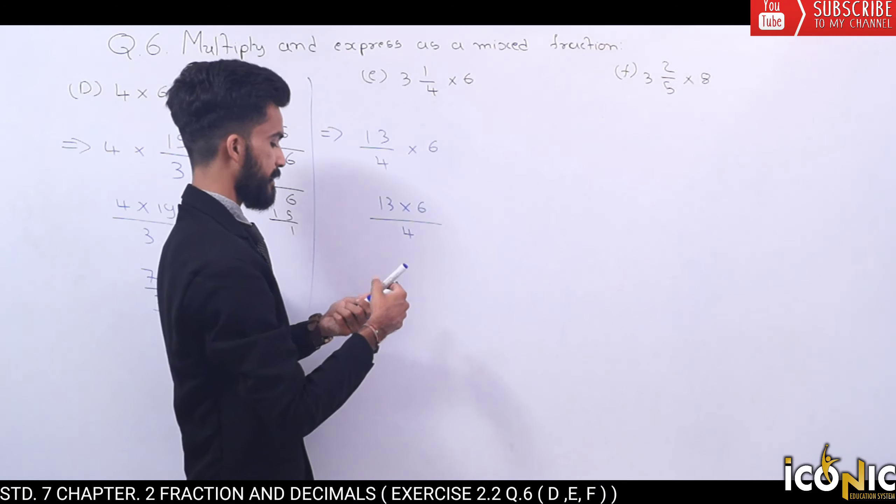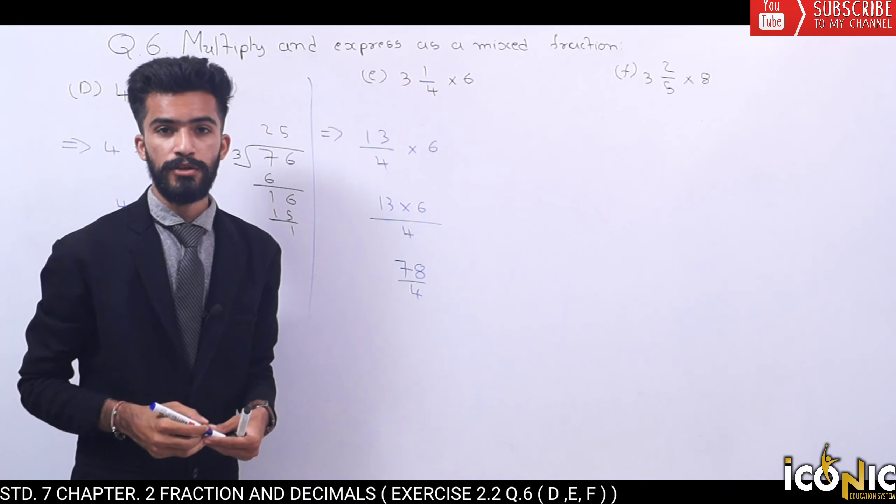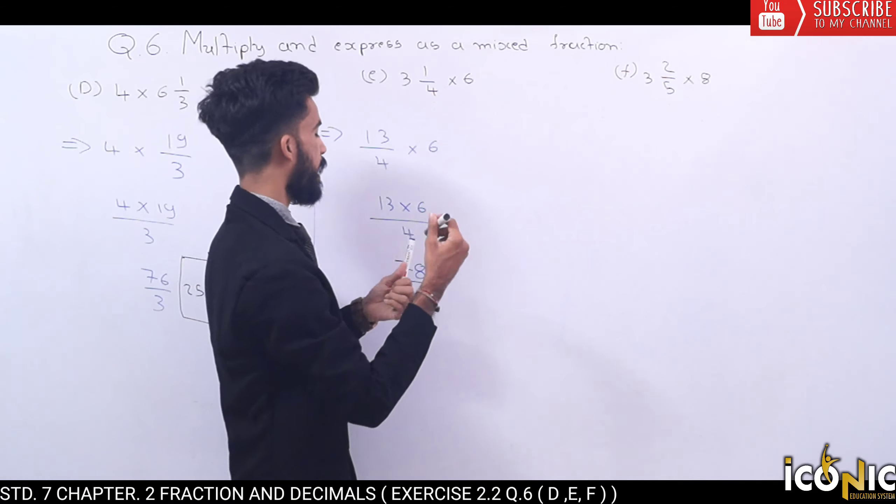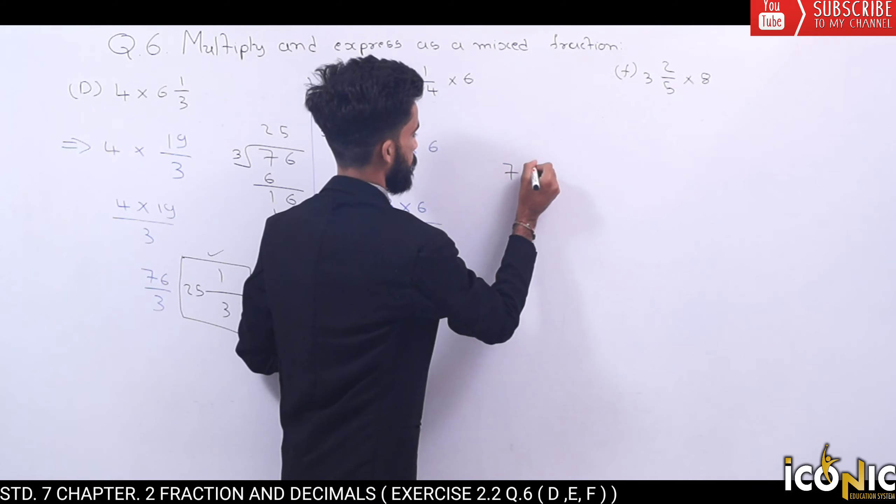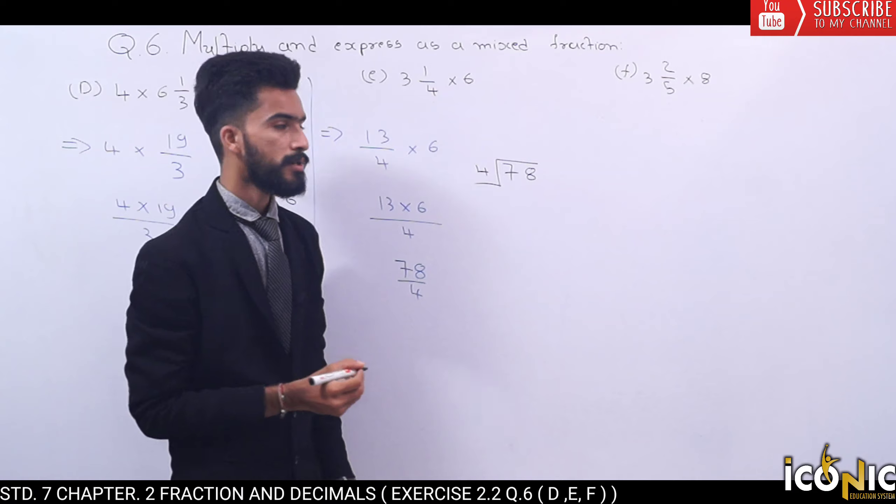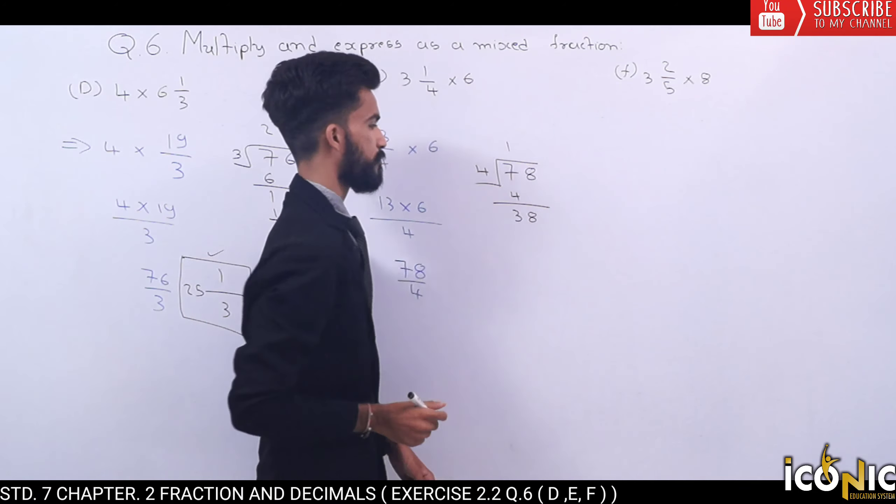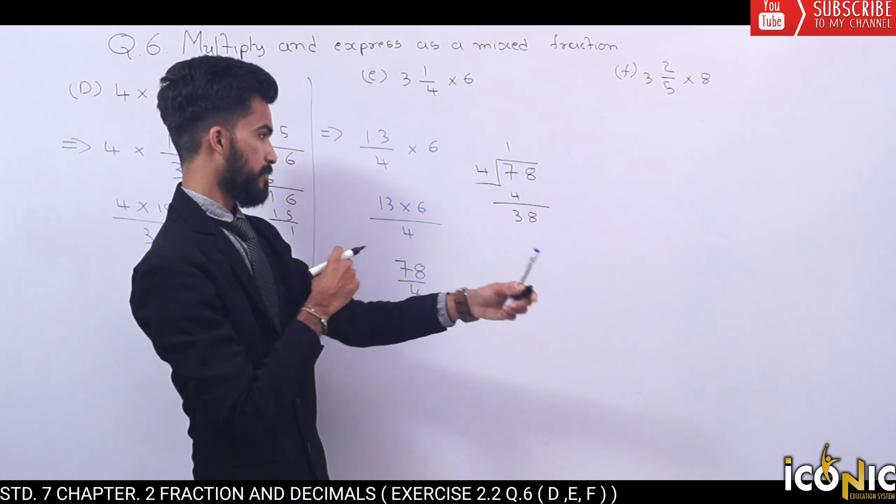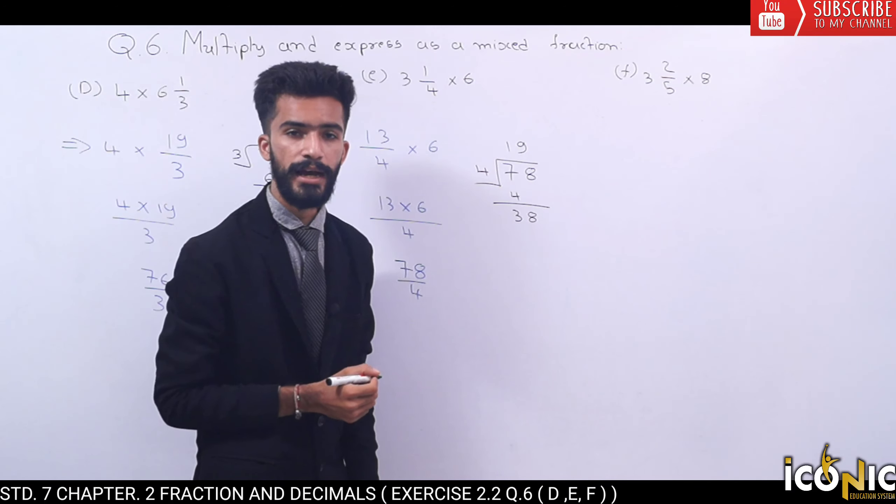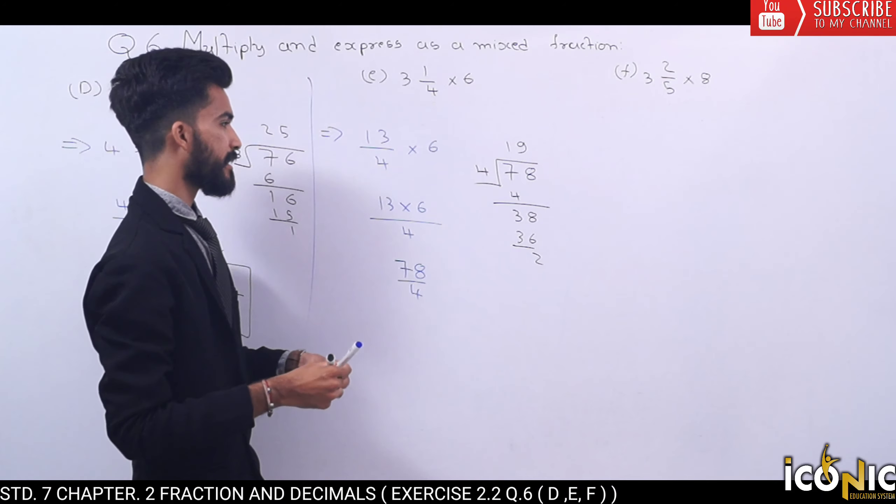13 times 6 is 78 upon 4. This should be 78. Let's do division on the side. 78 upon 4. 4 goes into 78... 9 times 4 is 36, remainder 2. So our answer will be...